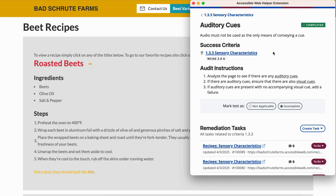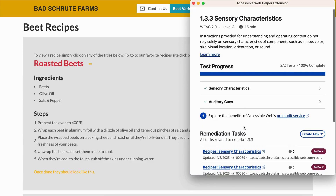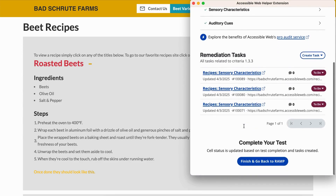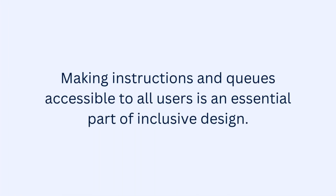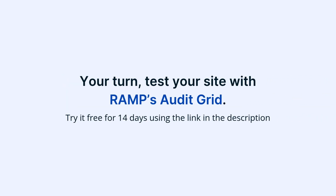That completes the audit for Success Criterion 1.3.3 using RAMPS Audit Grid and Chrome extension. Making instructions and cues accessible to all users is an essential part of inclusive design. Now it's your turn — test your site with RAMPS Audit Grid. Try it free for 14 days using the link in the description.